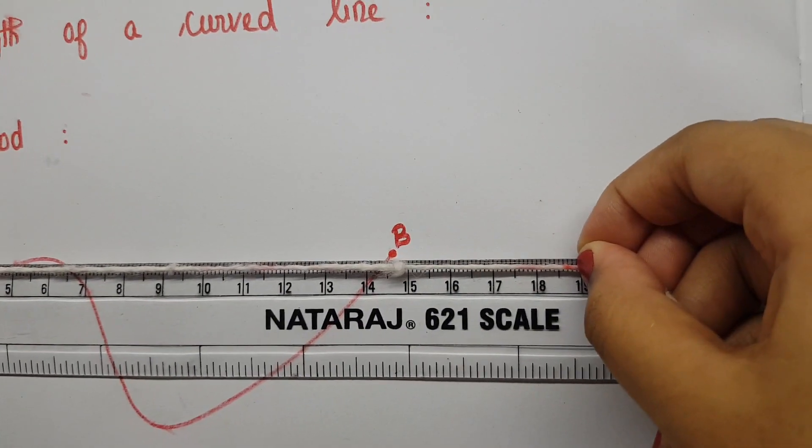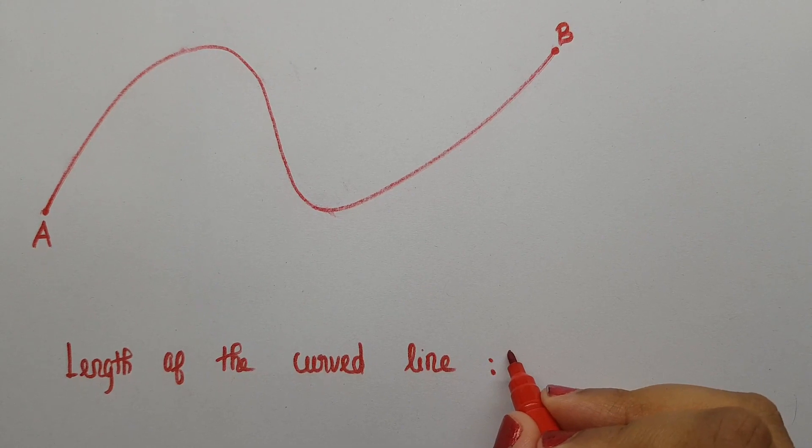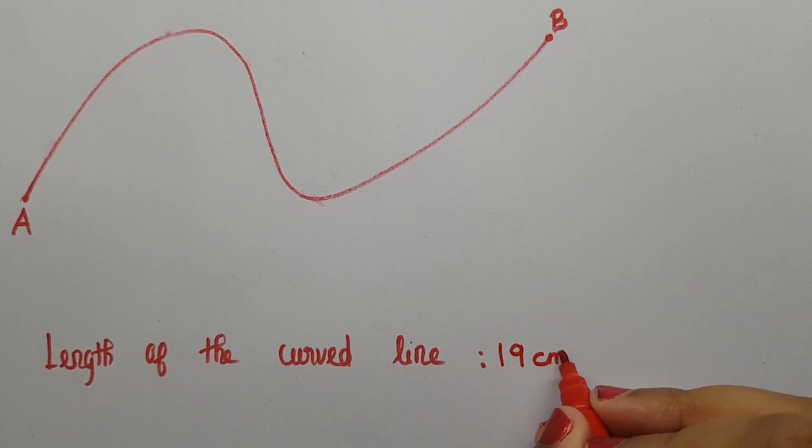The length of the curved line measured is 19 cm. Thus the length of the curved line is measured by using thread method.